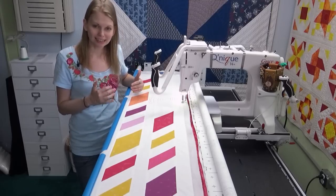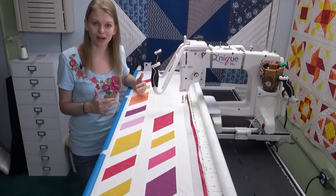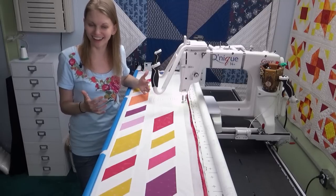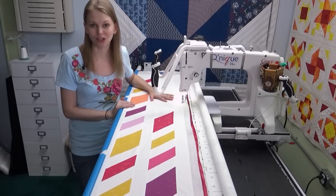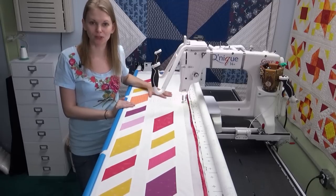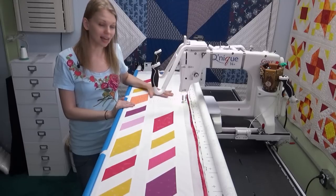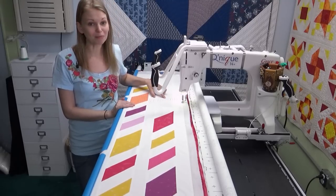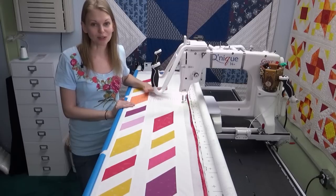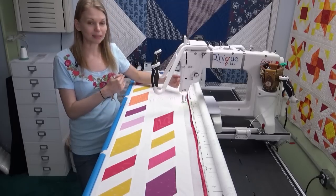The downside is it's a little slower. You're going to have to go at that slower pace of the walking foot. On the long arm we can go a lot faster, we can speed through that spiral super quickly, but the downside is we're not going to have that perfectly even spacing and we're going to have some wobbles. It's not going to be perfect. We're also going to be limited by the size of the frame.